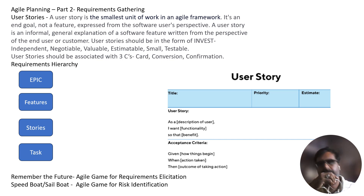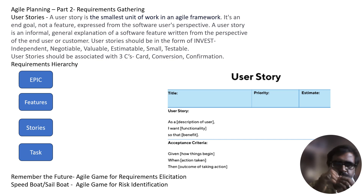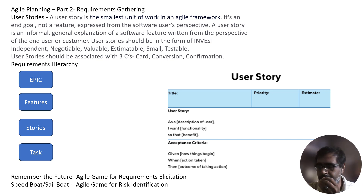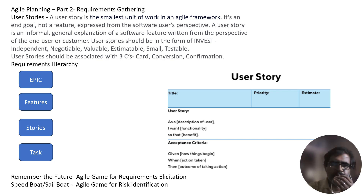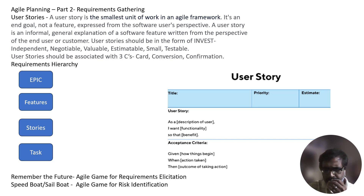The effective user stories should have six characteristics called INVEST. INVEST means: I stands for Independent, N stands for Negotiable, V stands for Valuable, E stands for Estimatable, S stands for Small, and T stands for Testable.